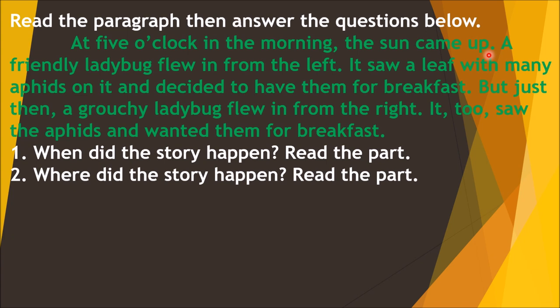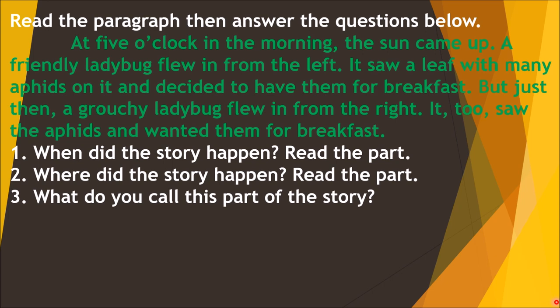Next question: where did this story happen? It's asking about where. A ladybug flew in from the left, and also the grouchy ladybug from the right. The next question asks: what do you call this part of the story? It's asking about when and where it happened. It is the beginning part of the story.